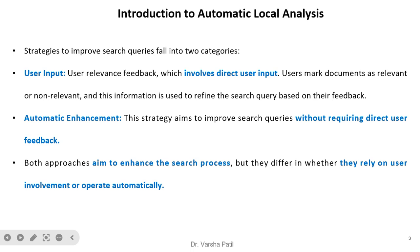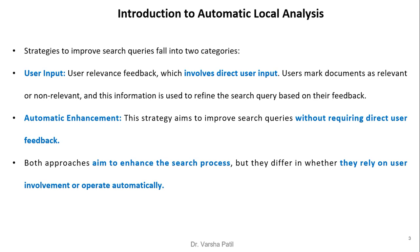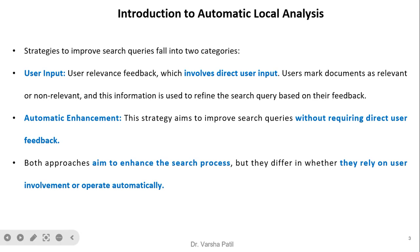Strategies to improve search queries fall into two categories: one is direct input from the user, and second is automatic enhancement. User input is nothing but user relevance feedback, given directly by the user. When results come after query submission, the user marks some documents as relevant and some as non-relevant. This information is used to refine the search query. In automatic enhancement, we do the same things but without relying on the user — these strategies aim to improve queries without requiring direct user feedback.